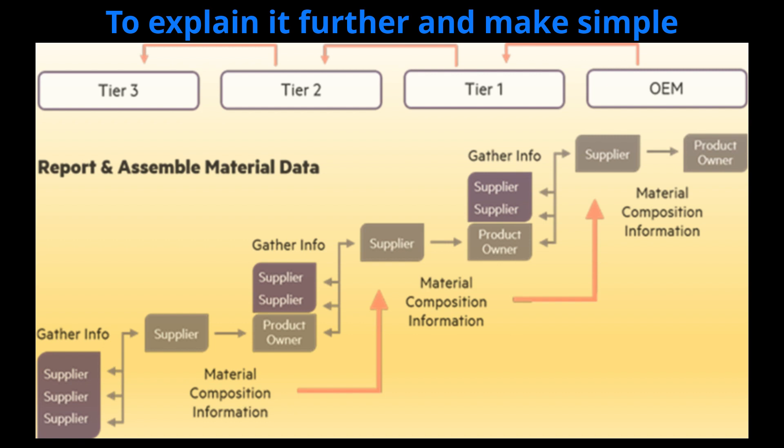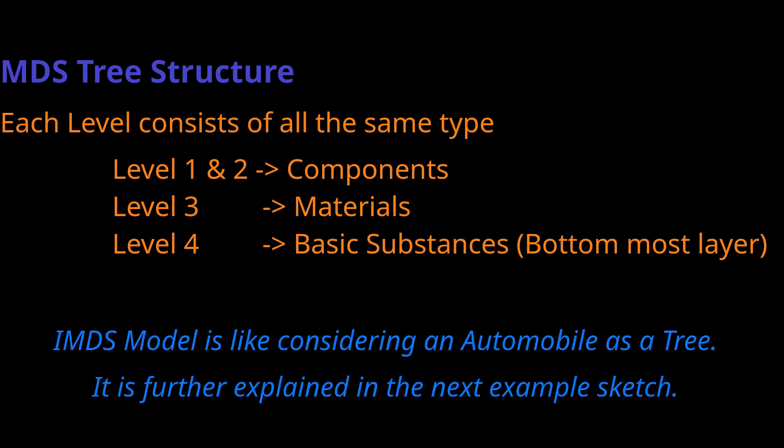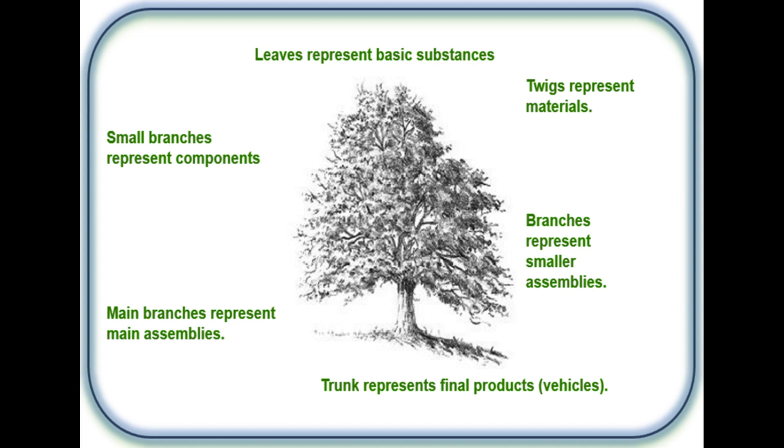Consider MDS as just like a tree. Each level consists of the same type of MDS — it will not allow substance and material MDS at the same level. Levels one and two are component MDS. Level three is materials MDS. Level four — the bottom-most — is basic substance MDS. A tree is formed from the bottom, that is basic substance, up to the peak, which is the finished vehicle. This tree concept is further explained in the next example sketch.